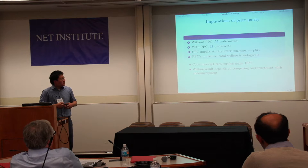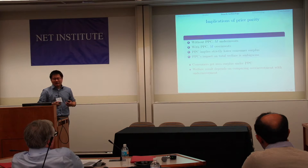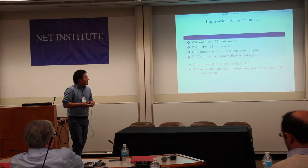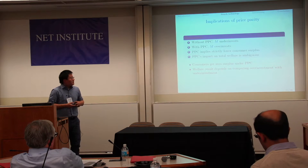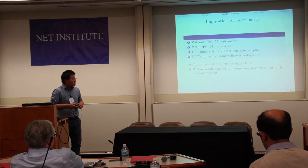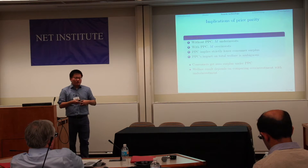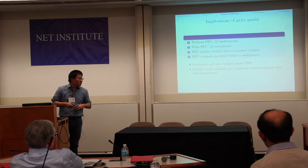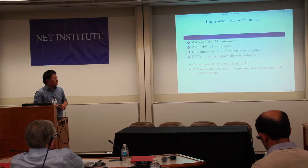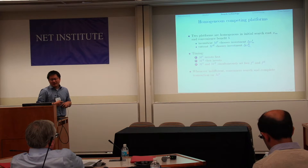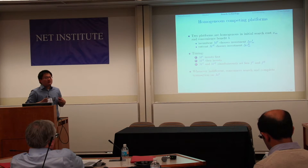To summarize the implications of price parity: without price parity there is underinvestment; with price parity there is overinvestment. Price parity implies strictly lower consumer surplus. Total welfare is ambiguous — without it there is underinvestment, with it there is overinvestment — so the result can go either way. That covers the monopoly platform case.